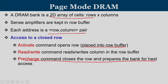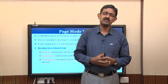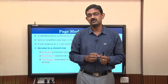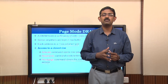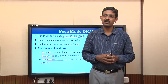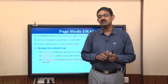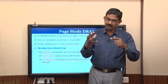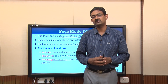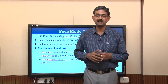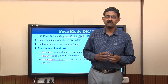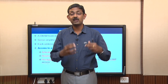A precharge command closes a row and prepares the bank for the next access. In DRAM, when a read operation occurs, the capacitor contents discharge through the bit line into the row buffer — this is called destructive read. Any read operation discharges the charges across the capacitor plates, deleting the stored logic value. The values are now in the row buffer. Before activating a new row, the existing row buffer contents must be stored back so the corresponding row capacitors hold the data again. This operation of storing row buffer contents back to the appropriate row is known as precharge.